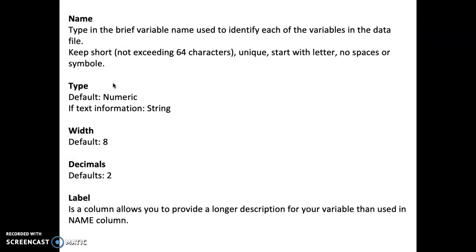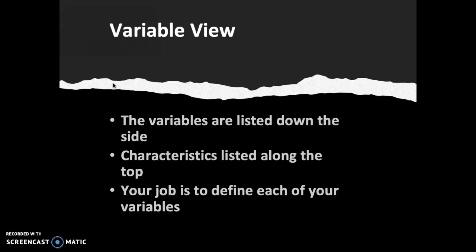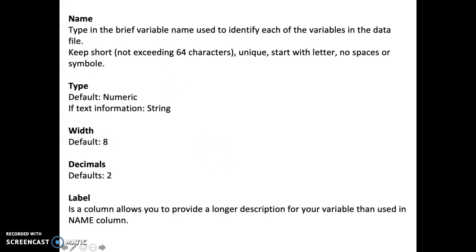Let's look at the first characteristic, characteristic that listed along the top of the variable view. The first one is name. So what is name? It is type in the brief variable name used to identify each of the variable in the data file. You need to keep short, not exceeding 64 characters. It is unique. Start with letter, no spaces, or even symbol. So that is what you type in the name area, very brief variable name used to identify each of your variable in the data file.